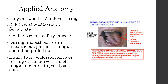The lingual tonsil forms a part of Waldeyer's ring. Waldeyer's ring is a collection of lymphatic nodules around the oropharyngeal isthmus where there is entry of air as well as food, so it acts as a first line of defense of the body. These lingual tonsils also form part of this ring. Other components are the palatine tonsil, the tubal tonsil, and the nasopharyngeal tonsil.